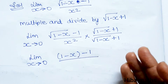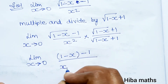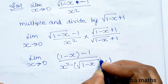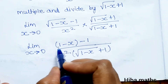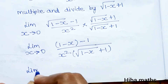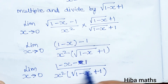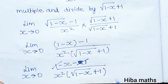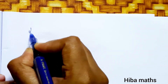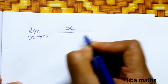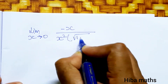Limit as x tends to 0, with root of (1 minus x) plus 1 in the denominator. Now removing the brackets: limit as x tends to 0 of (1 minus x minus 1) divided by x squared into (root of (1 minus x) plus 1). The 1 and minus 1 cancel, leaving minus x in the numerator.